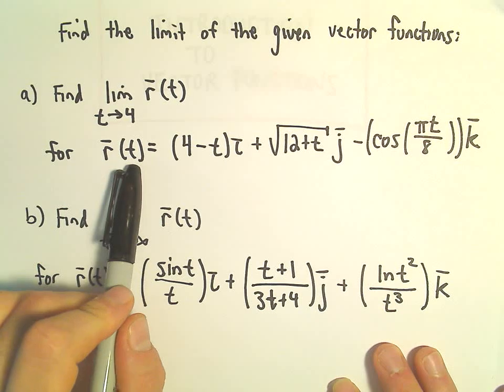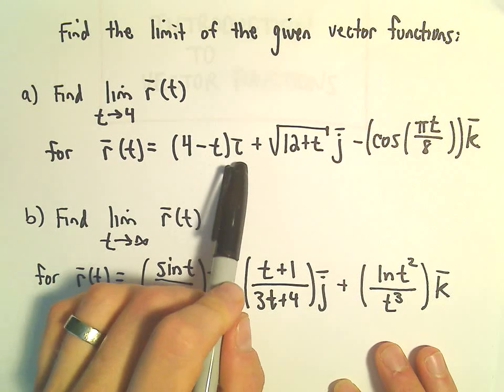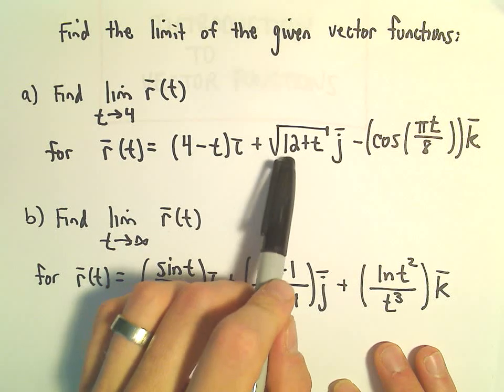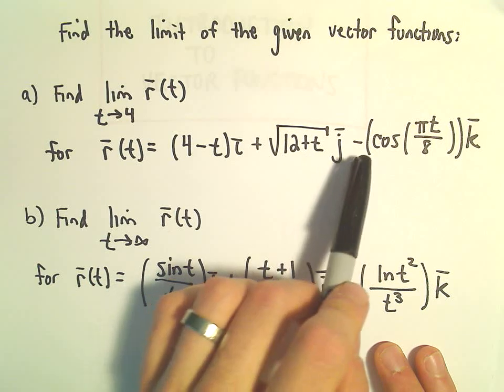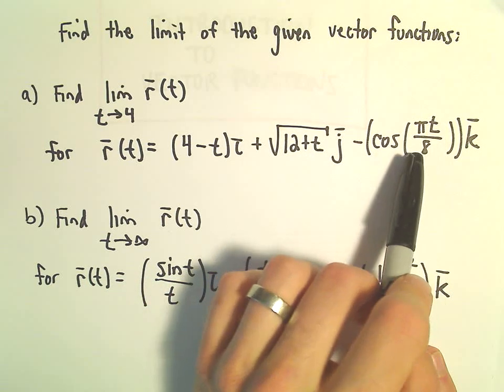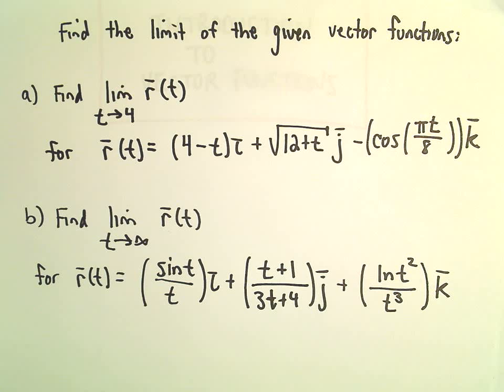So in part A we have the vector function r of t equals 4 minus t times i plus the square root of 12 plus t times j minus cosine of pi t over 8 times k. We want to find the limit as t approaches 4.